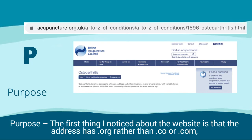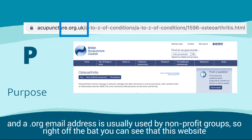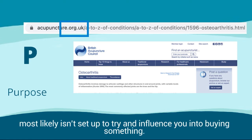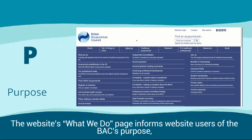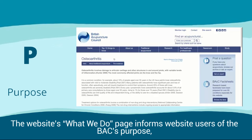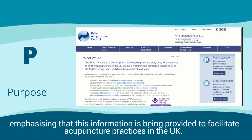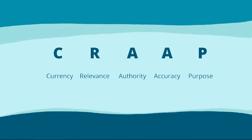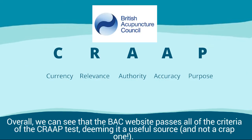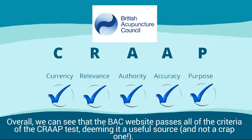Purpose: the first thing I noticed about the website is that the address has .org rather than .co or .com, and a .org address is usually used by non-profit groups, so right off the bat you can see that this website most likely isn't set up to try and influence you into buying something. The website's What We Do page informs users of the BAC's purpose, emphasising that this information is being provided to facilitate acupuncture practices in the UK. Overall, we can see that the BAC website passes all of the criteria of the CRAP test, deeming it a useful source, and not a crap one.